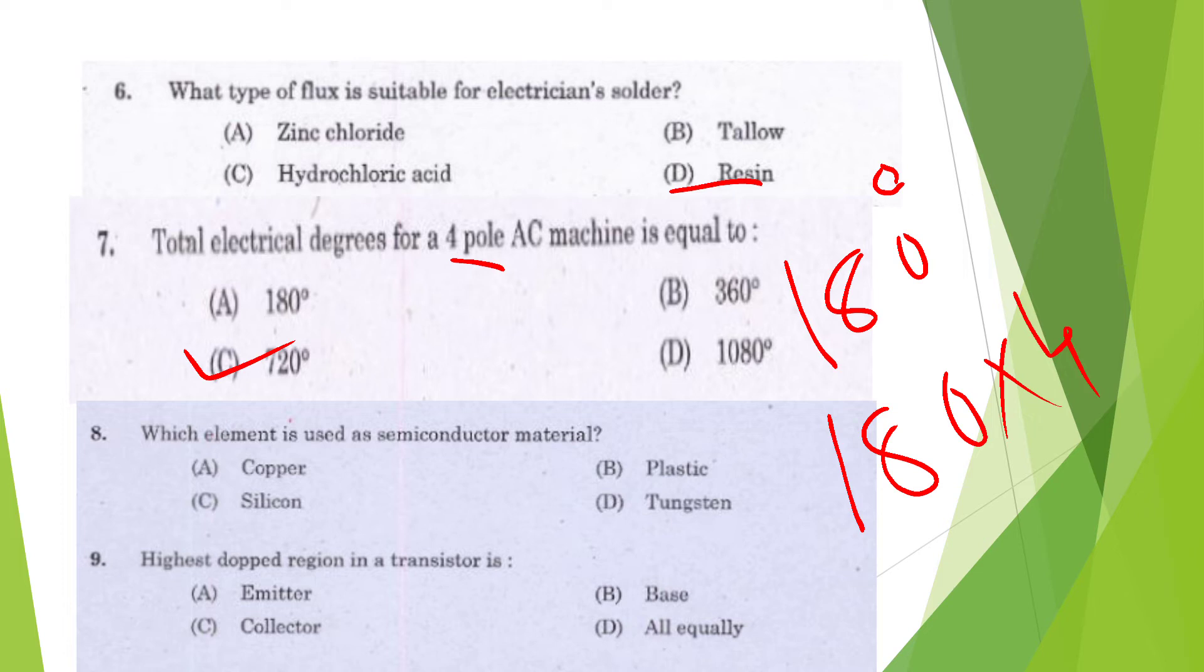Question 8: Which element is used as semiconductor material? Copper, plastic, silicon, or tungsten? Option is silicon. Question 9: Highest doped region in transistor is emitter, base, collector, or all equally? Highest doped region is emitter.